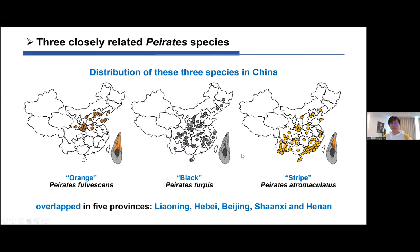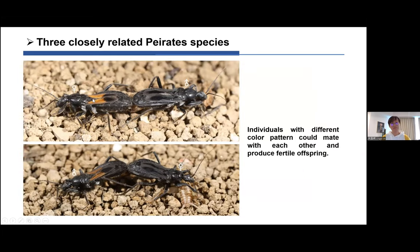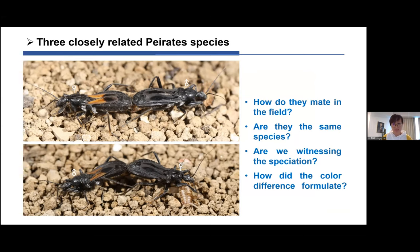Their distribution in China is similar to their overall range, and all three species overlap in five provinces: Liaoning, Hebei, Beijing, Shanxi, and Henan. We collected specimens from Wutai Mountain in Hebei Province, where all three species occur together. We reared them in the lab and expected that each color form would mate within its own type — but we observed mixed couples: orange female with black male, orange male with black female, and even the stripe one mating with the others.